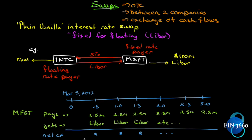Let's look at the mechanics. Intel and Microsoft enter into the swap agreement on March 5th, 2012. It's a three-year swap agreement with semi-annual payments — so there's a timeline of six months, one year, one and a half years, two years, and so on. Microsoft as the fixed rate payer will pay on the first coupon date, six months from now, 2.5 million dollars — that's five percent on a hundred million semi-annually. It is known with certainty on day zero that Microsoft will pay six coupon payments of 2.5 million over the three years.